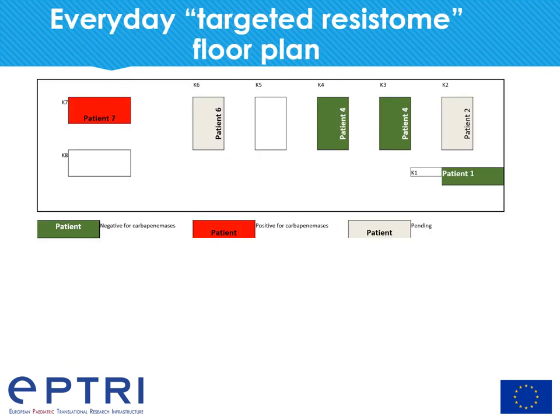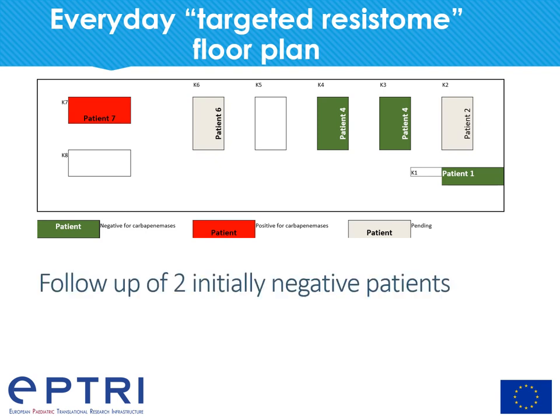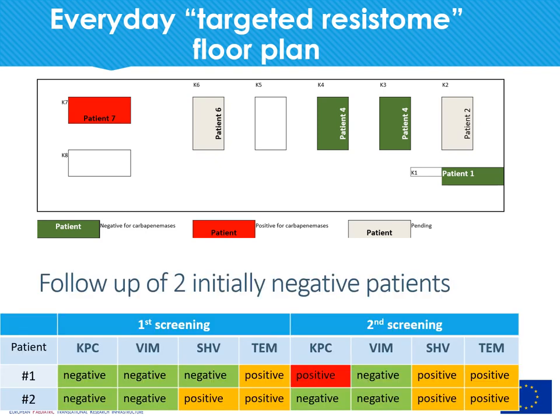Here we can see the everyday targeted Resistome floor plan, which was given to healthcare workers during the study. We can also see the follow-up of two initially negative patients: the first acquired KPC during their stay in the PICU, whereas the second was a success story — after two months in the pediatric ICU, this patient did not colonize with any carbapenemase.